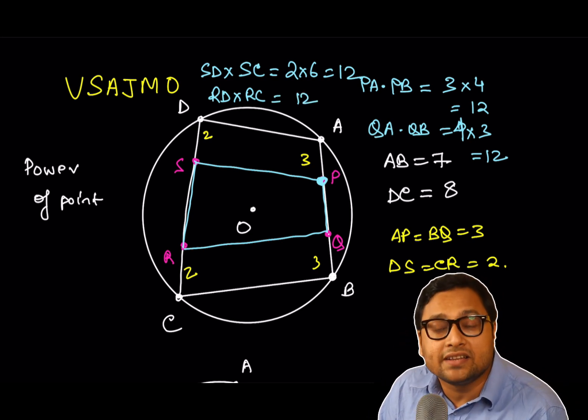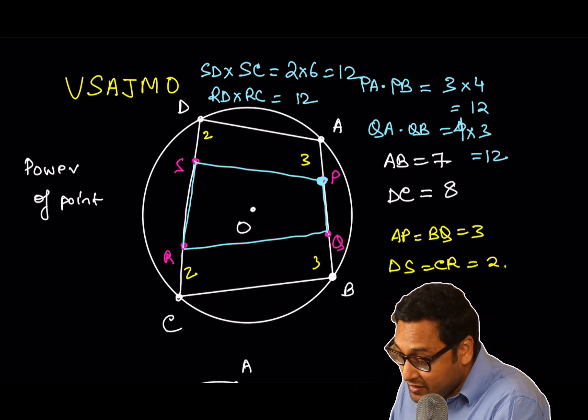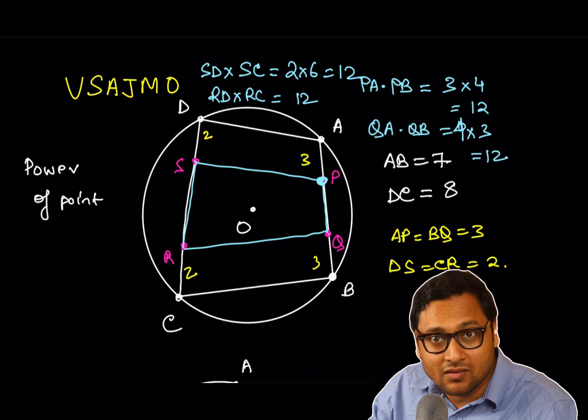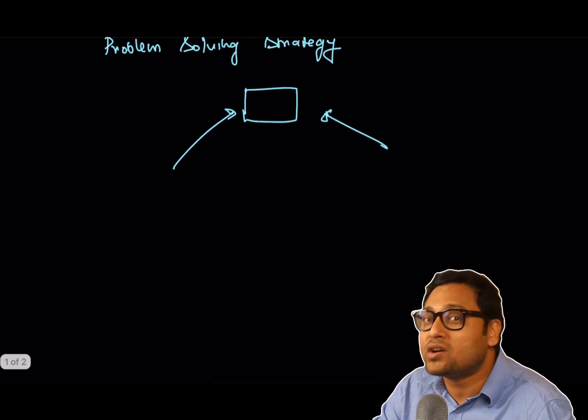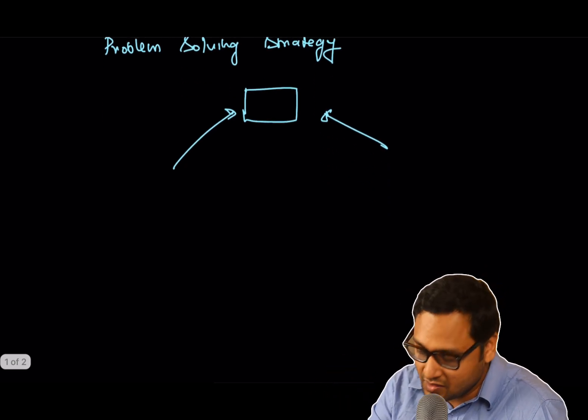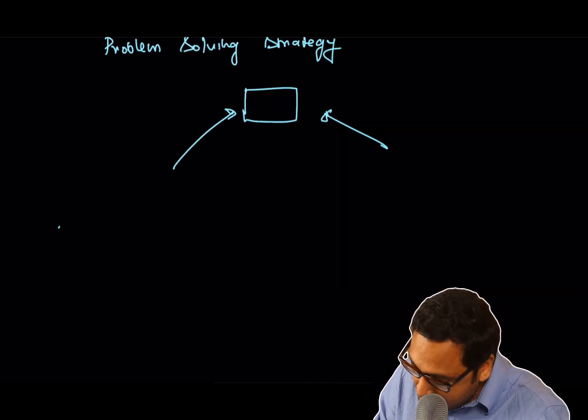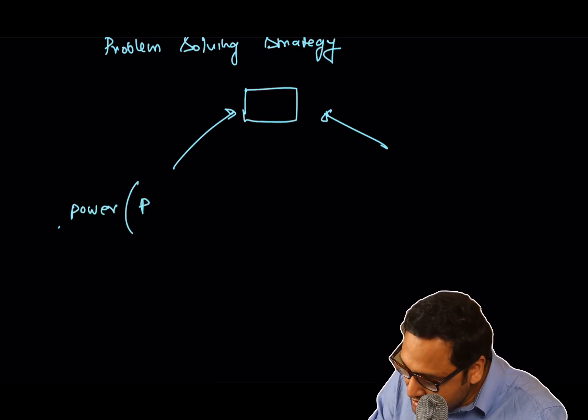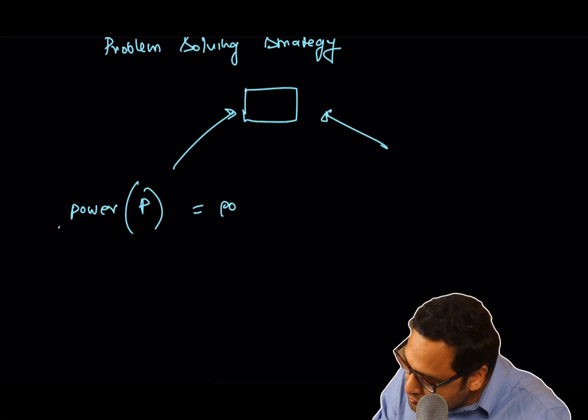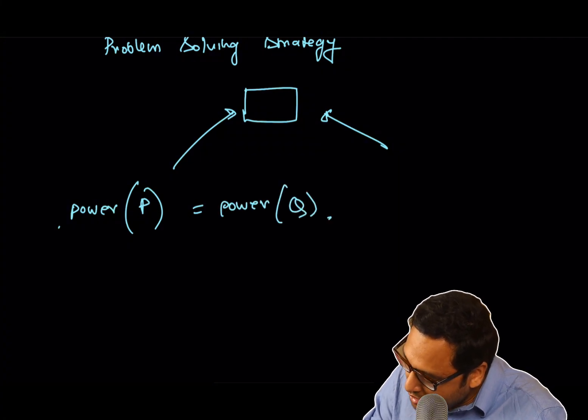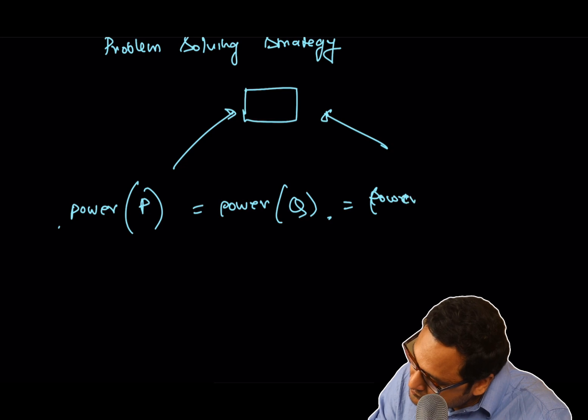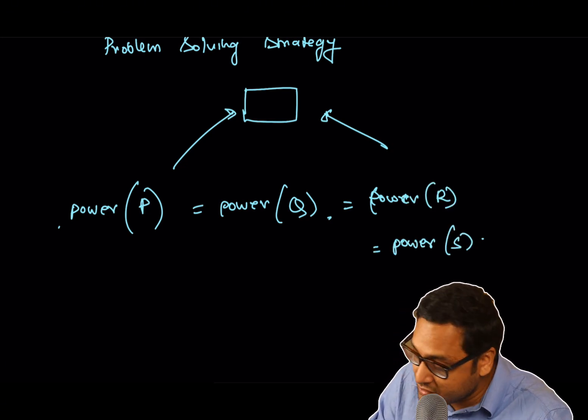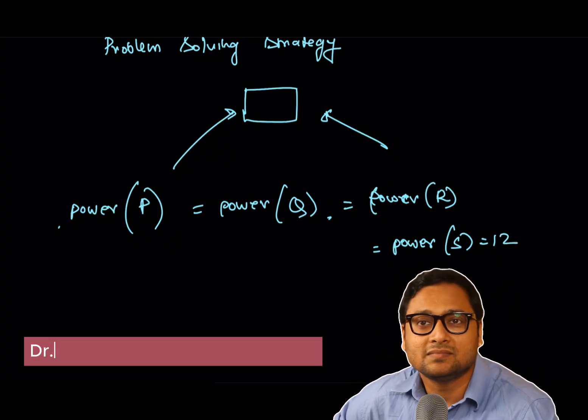So the power of the point P, Q, R, S, all of them are same. Which is the most important fact of this problem. So, let me write it down. Power of any of these points, P or Q or R or S, all of them are equal to 12. That's what we found.